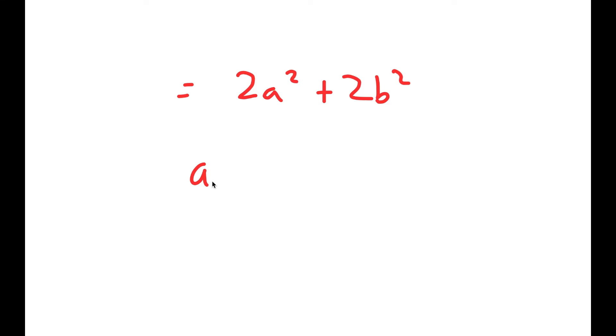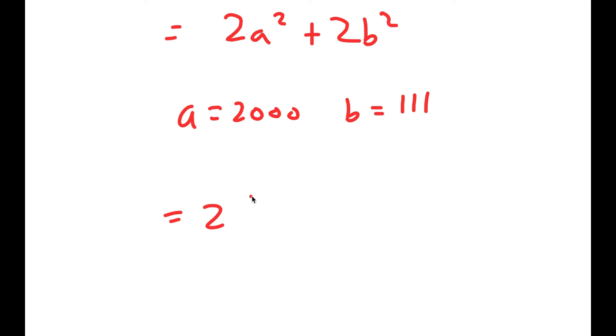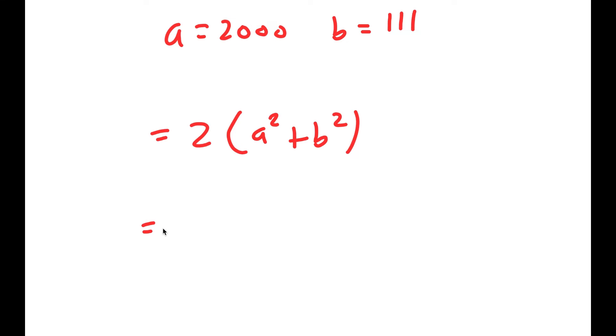And remember, a is 2,000 and b is 111. So this turns into 2 times (a² + b²) because I'm factoring out 2. And this turns into 2 times (2,000² + 111²).